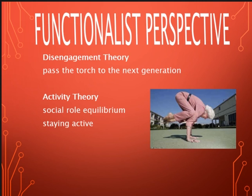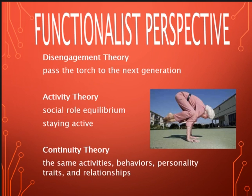Lastly, we have the continuity theory, which sounds very similar to the activity theory. This is the idea that older adults will usually maintain the same activities, behaviors, personality traits, and relationships as they did in their earlier years. This theory considers the internal and external structures of continuity, describing how people adapt to their circumstances and set their goals. For example, you continue to sing in the choir, you continue to be a part of your family. Anything you were previously interested in, you can continue to do — and so long as you continue doing the same things, this is a much easier transition as you get older and face biological changes.